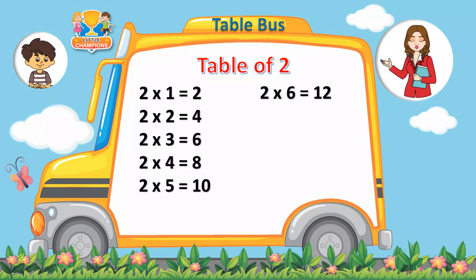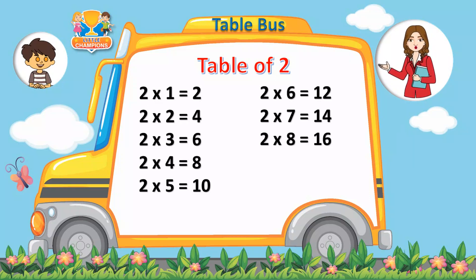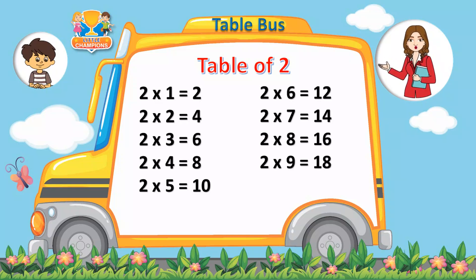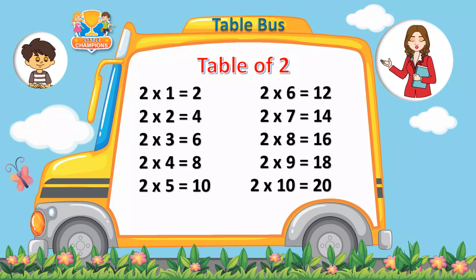Two sixes are twelve. Two sevens are fourteen. Two eights are sixteen. Two nines are eighteen. Two tens are twenty.